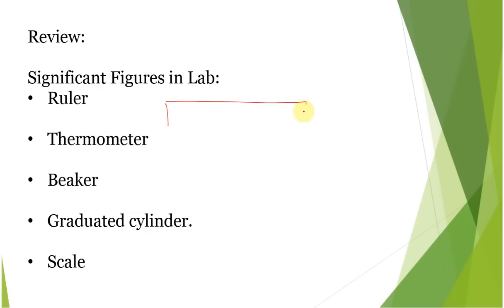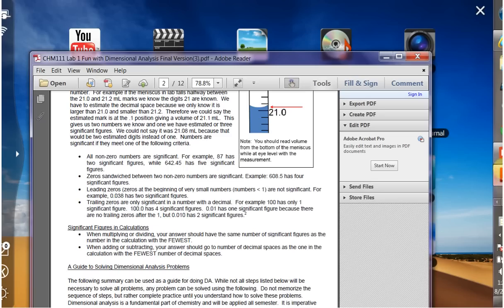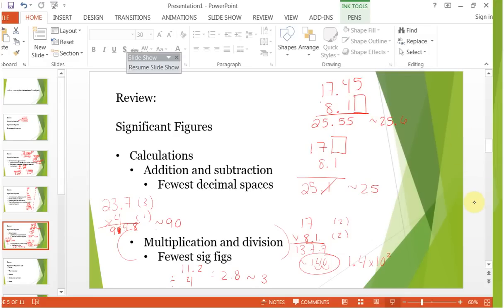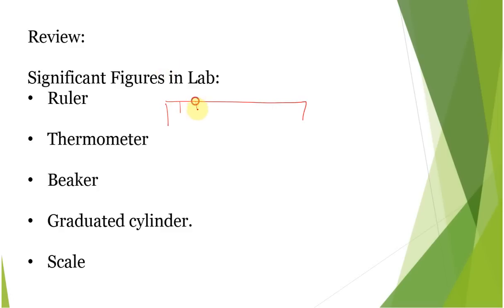As far as what this means in lab, you want to make sure that you are reading all known values and one estimated. So if you are measuring a beaker, you are going to measure the diameter of the beaker, for example. You are going to measure the inside of the beaker, inside wall to inside wall. You want to make sure you are only measuring where the fluid is going to be held.